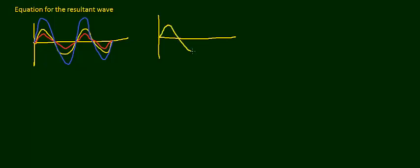Similarly, we could also have destructive interference. The first wave is something like this, and the second wave is something like this. As you can see, the crest of one wave matches the trough of the other, so these two cancel each other out. The resultant is not a wave — it's a straight line, because they cancel each other completely.